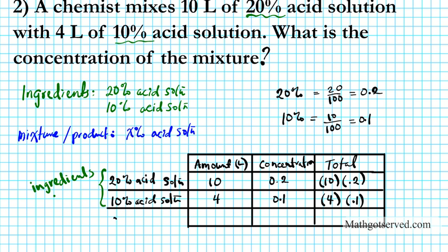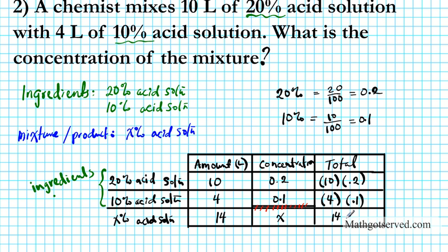Last but not least is the mixture, which is the x% acid solution. For the amount, I can just add these two: remember, the only two columns you can add are the Amount and Total — you cannot add the Concentration. I'm going to put a line here so we don't get confused. Never add the concentration. So the amount is just 10 plus 4, which is 14. The concentration of my final product is x — I don't know what it is, so we call it x in decimal form. Note that our answer will be in decimal form and later we'll convert it to percent. The total is 14 times x.